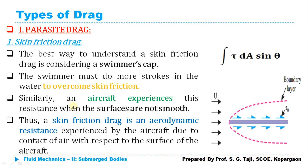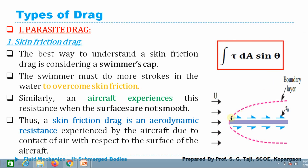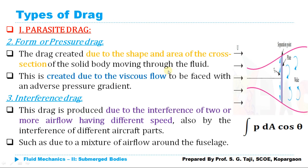Skin friction drag, which we have already discussed, can be computed using the integration of tau dA sine(theta). When a plate is held parallel to the direction of motion, theta becomes 90 degrees, pressure drag reduces to zero, and total drag is only due to skin friction drag. Skin friction drag is experienced by every object moving through a fluid at its surface, due to surface roughness. Swimmers experience this too — to overcome it, they wear a smooth swimmer's cap to reduce skin friction drag.